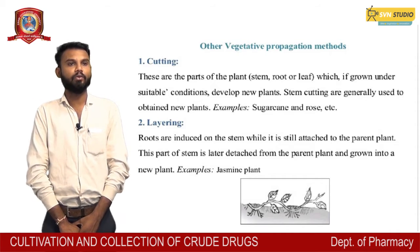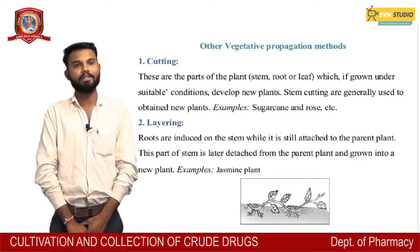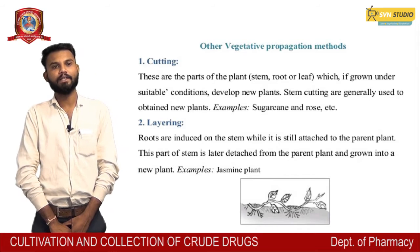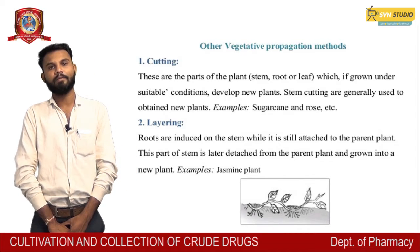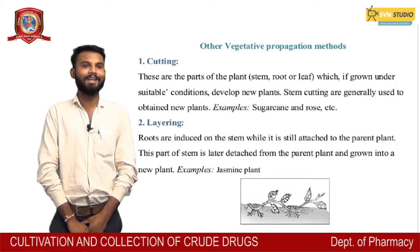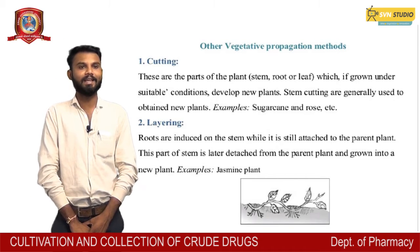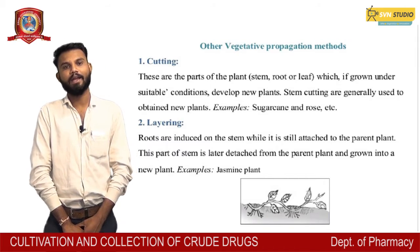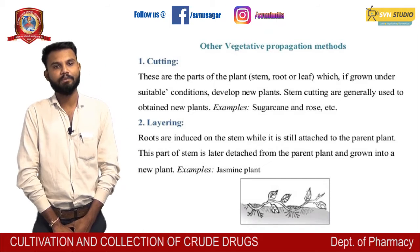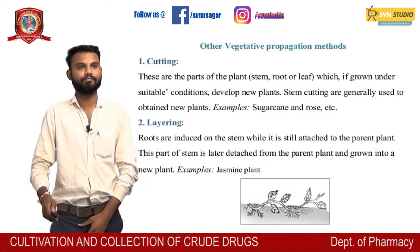2. Layering — roots are induced in the stem while it is still attached to the parent plant. This part of the stem is later detached from the parent plant and grows into a new plant, e.g., jasmine.